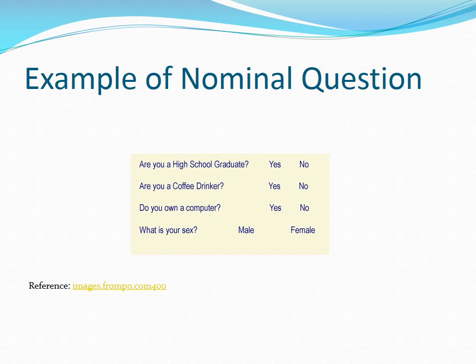An example of a nominal question: the questionnaire asks, 'Are you a high school graduate? Yes or no. Are you a coffee drinker? Yes or no. Do you own a computer? Yes or no. What is your sex? Male or female?' You can see that responses to these questions are quite simple answers. We cannot rank this data.